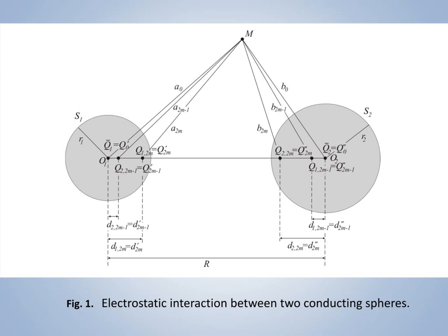We denote the charges located in the sphere S1 with Qj prime and those located in the sphere S2 with Qj second. Their corresponding distances to the centers of the spheres we denote with dj prime and dj second.